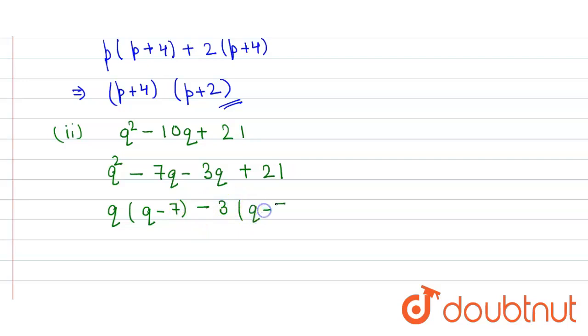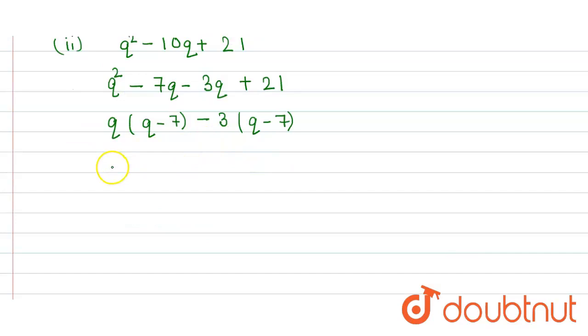Now we take q - 7 common, so we get (q - 7)(q - 3), and that is the factorization.